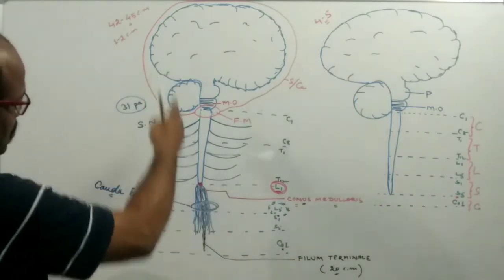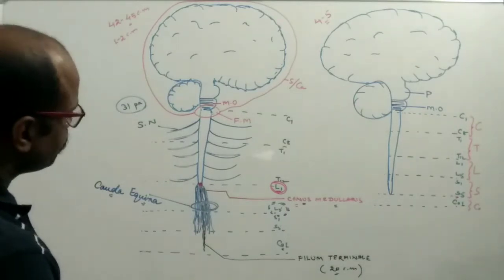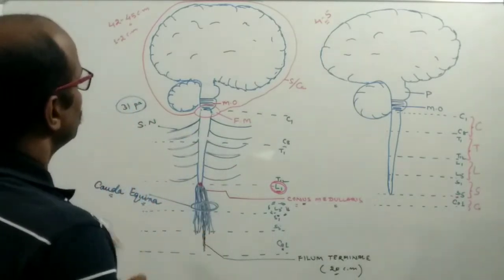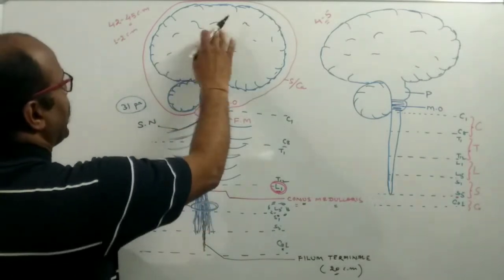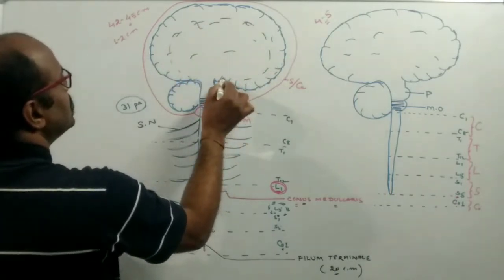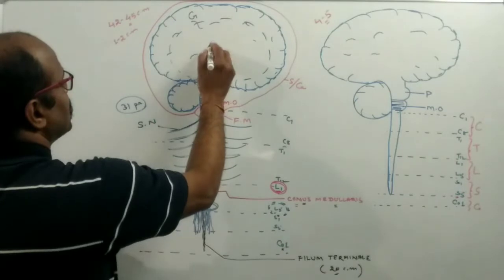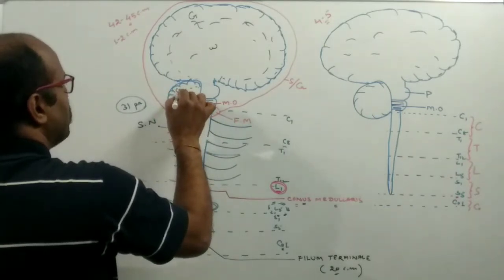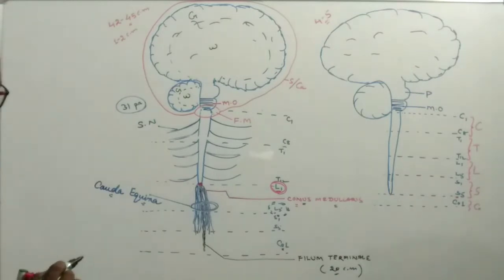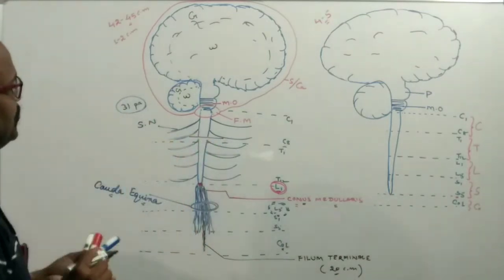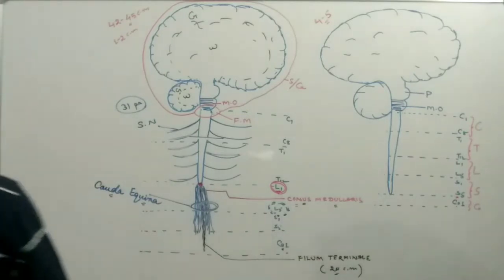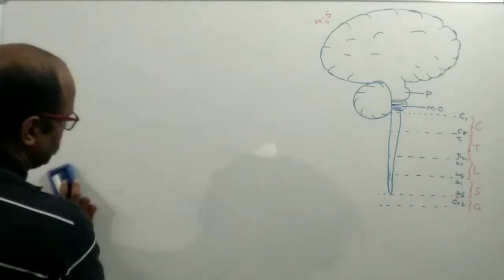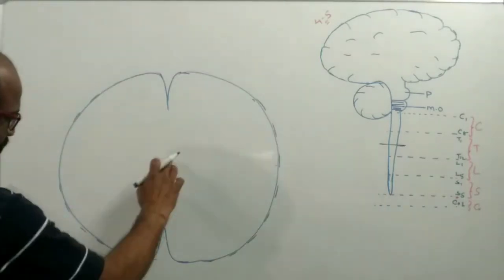This is about the morphological structure of the spinal cord. Now we come to the internal structure of the spinal cord. In the brain, the outer region is grey matter and the inner region is white matter. But in case of the spinal cord, the condition is opposite — the outer region is white matter and the inner region is grey matter.